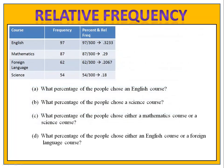Now that we have that, we can answer a series of questions. What percentage of the people chose an English course? That was 32.33%.